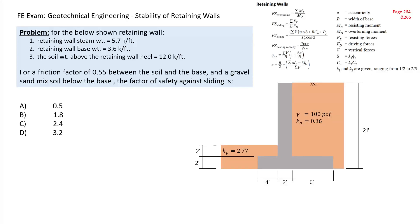Welcome back everybody. Today we are discussing a geotechnical engineering problem related to stability of a retaining wall. Our problem: for the below retaining wall, the weight of the retaining wall stem is 5.7 kip per foot, and the retaining wall base weight is 3.6 kip per foot.